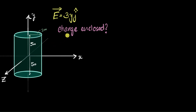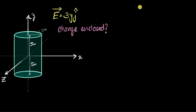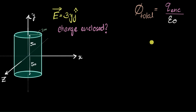At first it feels like, where do I start? I see some equations, I see some coordinates, you ask me to calculate charge enclosed — where do I start solving this? But one of the things that comes to mind is: this is a closed surface. And why that's important is because Gauss's law can apply to closed surfaces. Gauss's law says that the total flux through the closed surface will always equal the charge enclosed by the closed surface divided by epsilon naught.